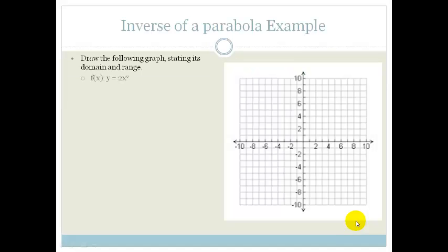It says draw the following graph stating its domain and range. And we've got f(x) equals y equals 2x squared. So the first thing I would do is I would just substitute in numbers. When x is 0, y is 0. Pretty easy.